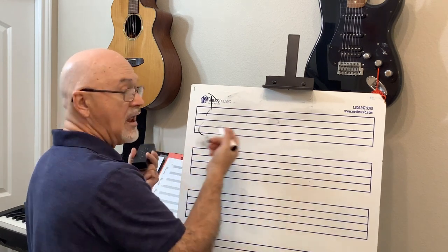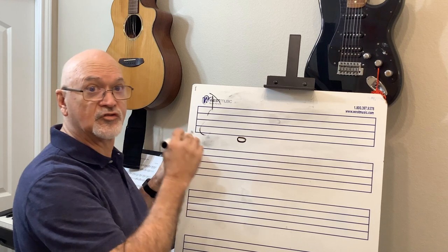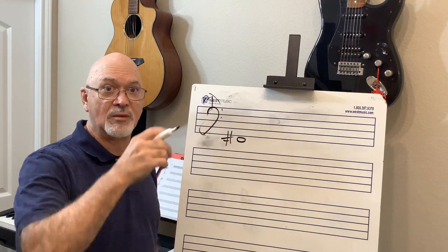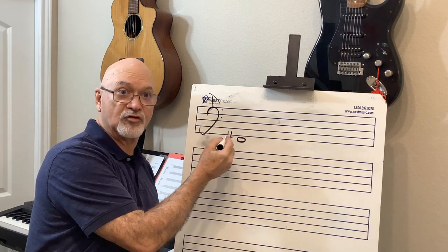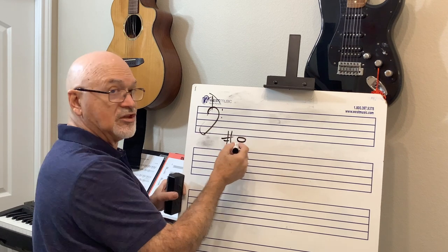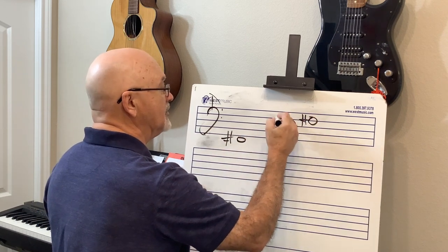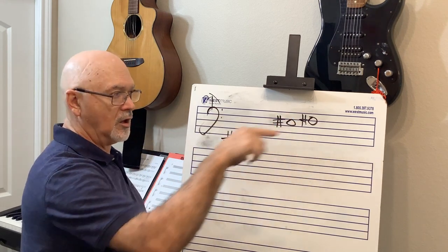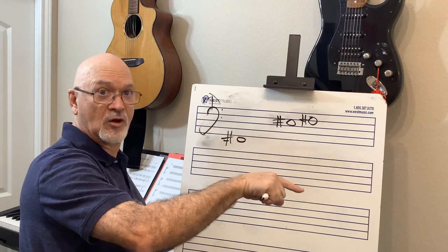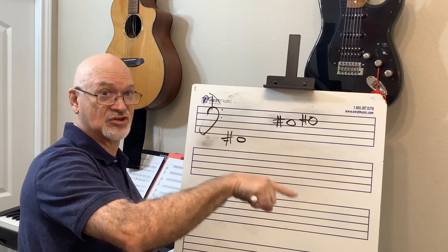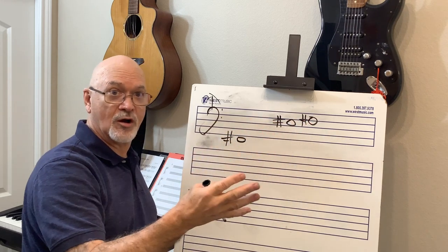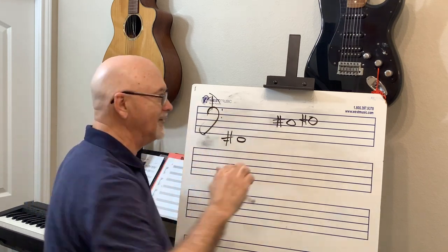Key of B: leading tone is A-sharp. Then F-sharp — the first sharp key where the sharp actually appears in the name. F-sharp's leading tone is E-sharp. On the piano it looks like an F, but in this key it's E-sharp because we've already used F — you don't reuse letter names in scales. Similarly, C-sharp's leading tone is B-sharp.